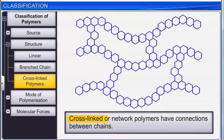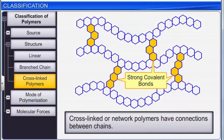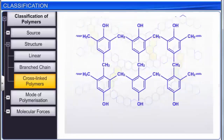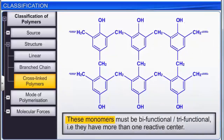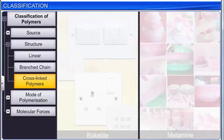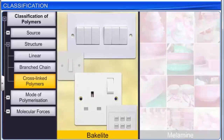Cross-linked or network polymers have connections between chains via strong covalent bonds that link various linear polymer chains. In order to form these covalent bonds, the monomers in cross-linked polymers must be bifunctional or trifunctional, meaning they have more than one reactive center. Examples of cross-linked or network polymers are bakelite and melamine.